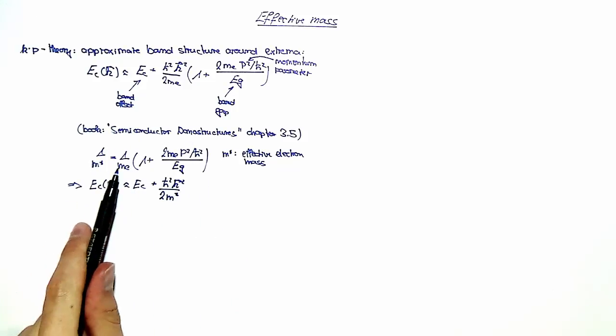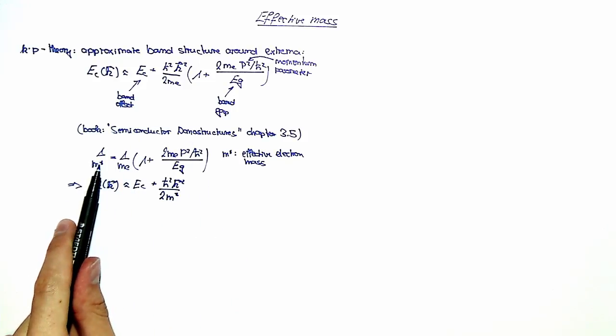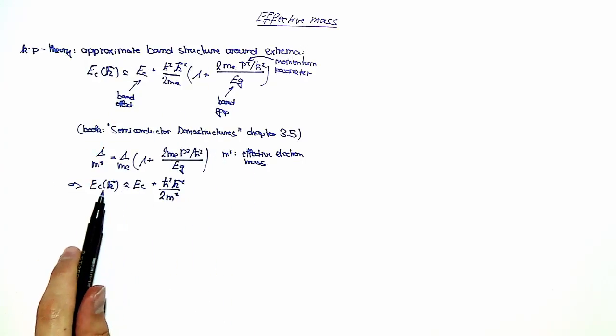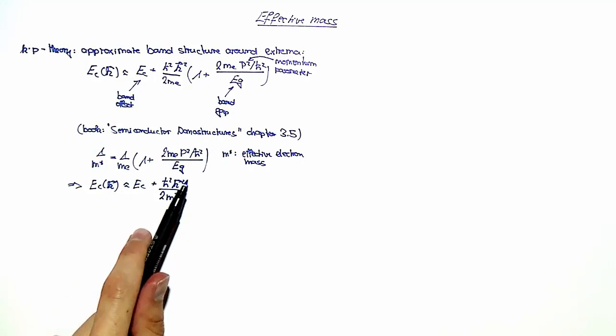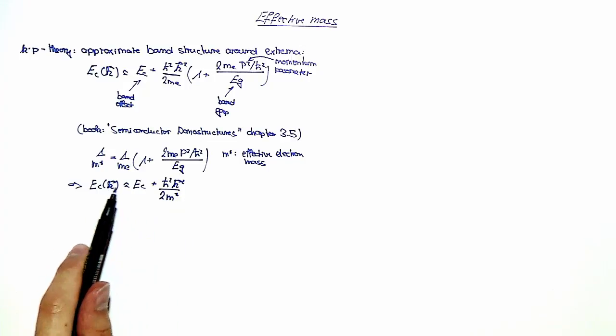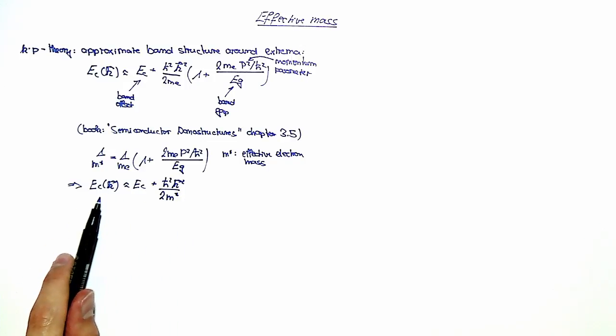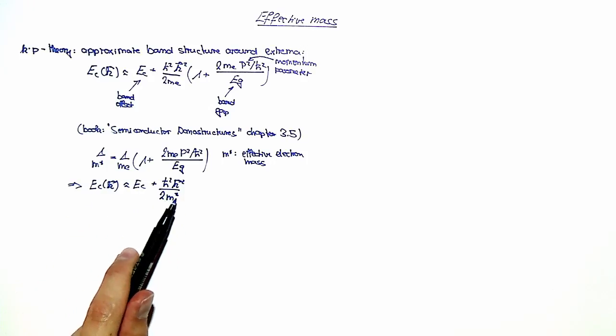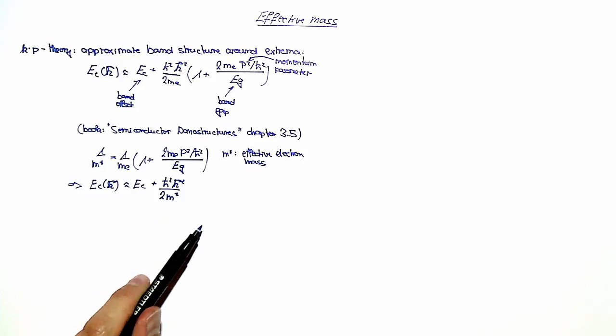So this is the equation we obtained for the effective electron mass. And if we just plug it in into the equation over here, we get a parabolic dispersion relation for the conductance band electrons. However, these charge carriers do not have the free electron mass, but an effective electron mass, which is basically due to the interactions in the system.